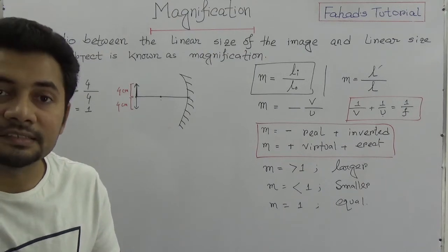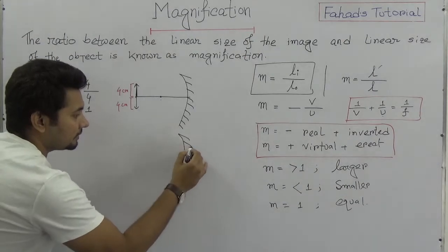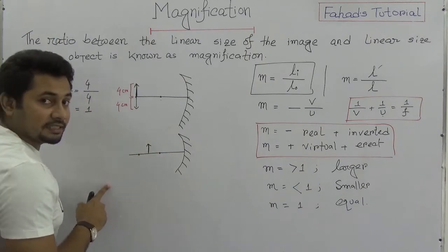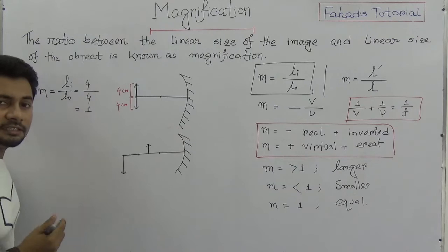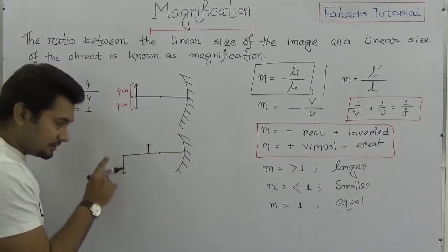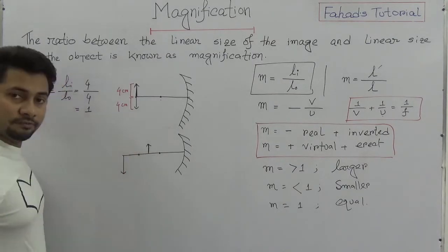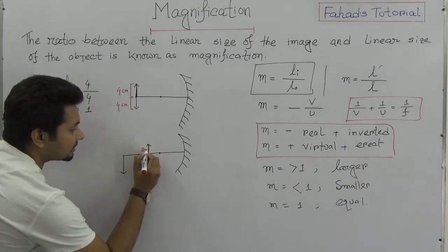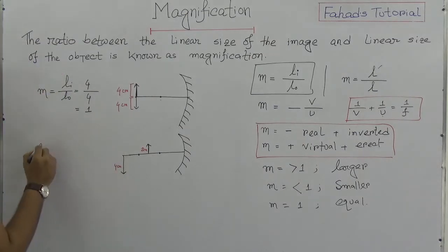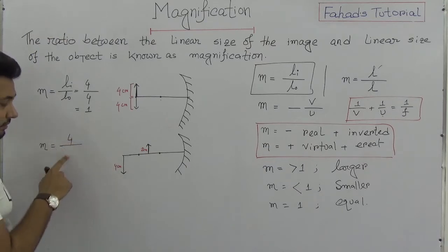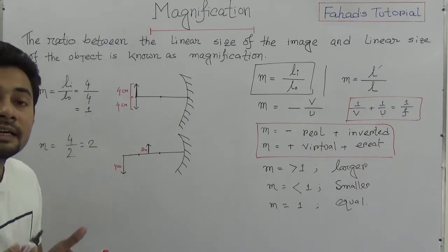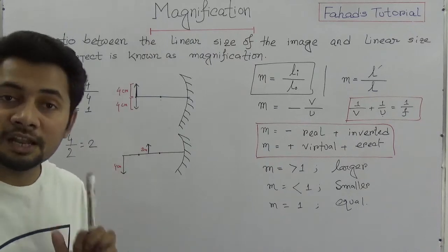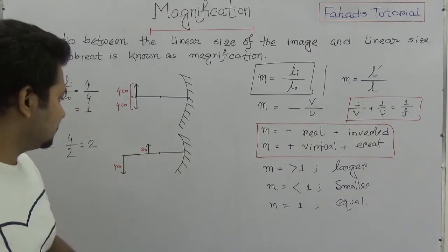If the object is placed between F and C, the image forms beyond C and is larger. For example, if the image length is 4 cm and the object length is 2 cm, then M = 4/2 = 2, which is greater than one, meaning the image is larger than the object.